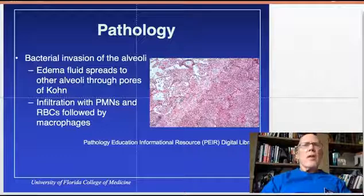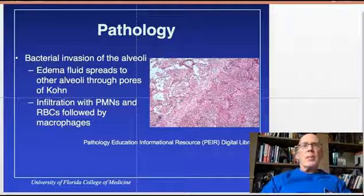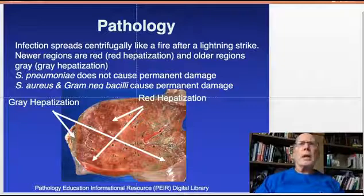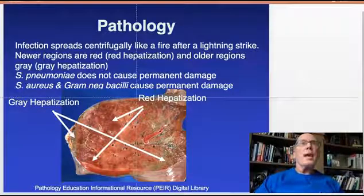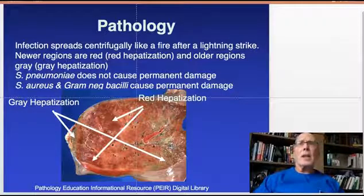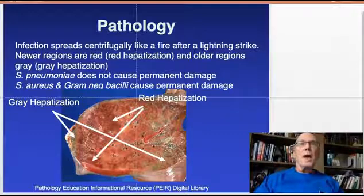When bacteria enter the alveoli, they induce production of edema fluid that spreads to other alveoli through the pores of Kohn. Neutrophils quickly arrive to ingest the pathogens, and often red cells also leak into the site. Later, as the infection begins to be controlled, macrophages enter. Infection spreads outwardly — imagine a fire spreading after a lightning strike. New regions appear red, termed red hepatization, due to infiltration of white cells and red cells. Older regions appear gray, termed gray hepatization, as macrophages enter and clean up the red cells. Streptococcus pneumoniae does not contain proteases and therefore does not cause permanent pulmonary tissue damage, while Staph aureus and gram-negative bacilli produce proteases that break down tissue and cause permanent damage.